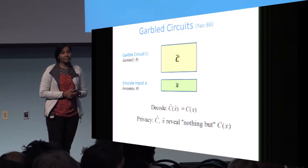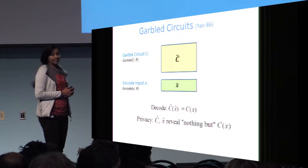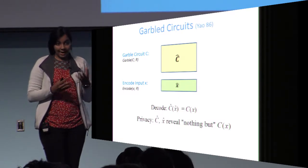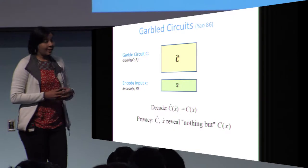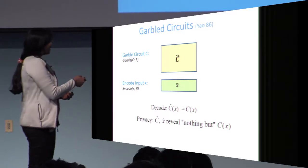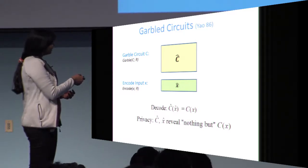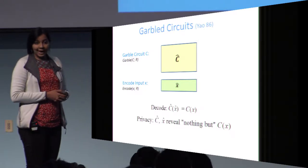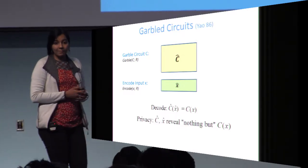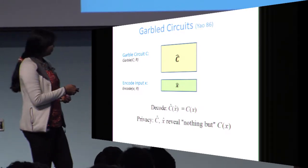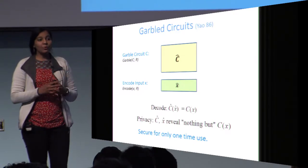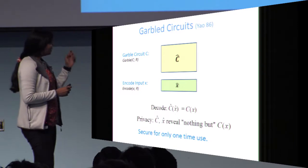Garbled circuits are a classic primitive in cryptography dating back to the 80s. The idea is that you want to run some circuit C on some input x, but you do not want the evaluator to learn either the circuit C or the input x. So you garble the circuit to get C-hat, garble the input to get x-hat, and a decode procedure takes C-hat and x-hat and outputs exactly C(x). Privacy requires that C-hat and x-hat reveal nothing but C(x) to the evaluator. This primitive has tremendous applications, but it is only secure for one-time use.